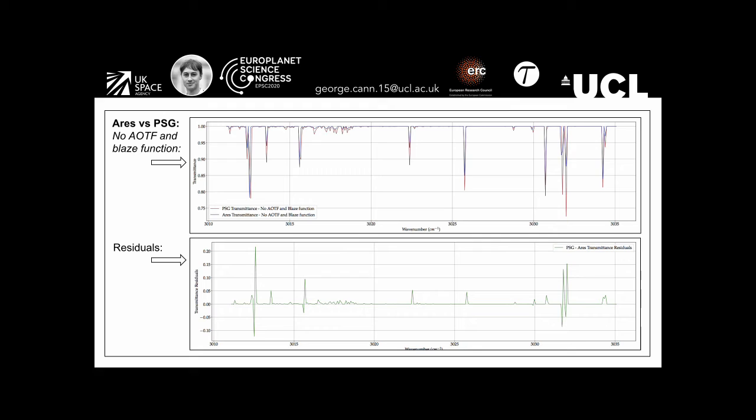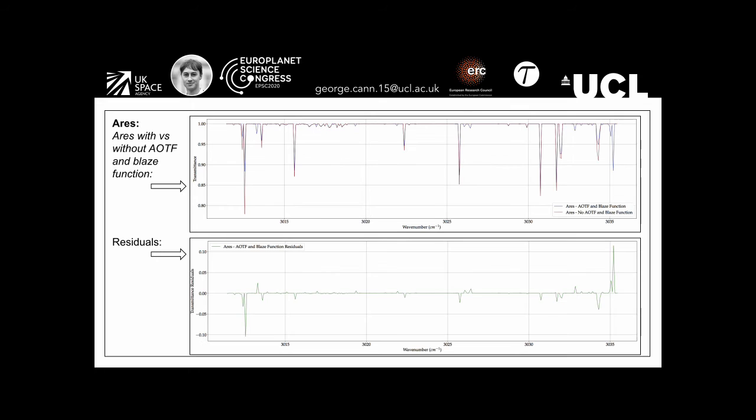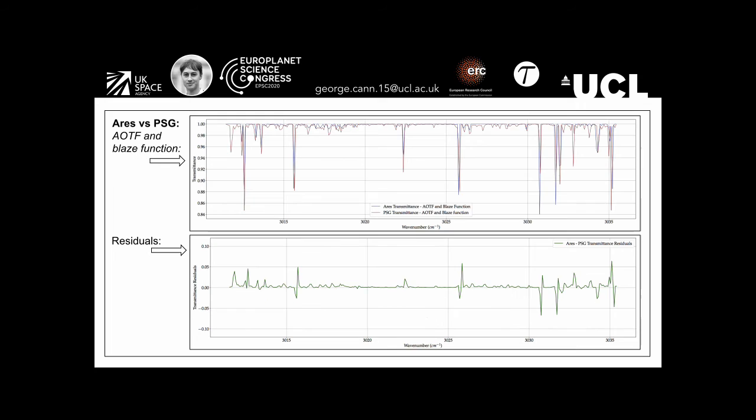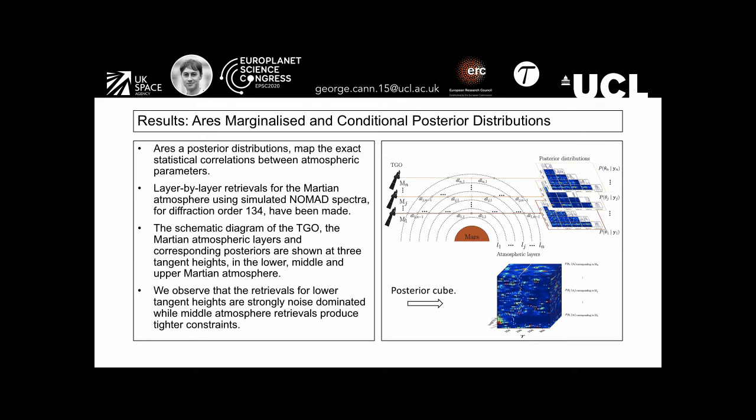The diagram here is the same as the one shown on the previous slide, zoomed in, whereby ARIES and the PSG are compared against one another with no AOTF and blaze function applied. The residuals are seen below. The next example shows only ARIES but with and without AOTF and blaze function applied. The final example shows ARIES versus the planetary spectrum generator with AOTF and blaze function applied in both cases. We find that the residuals are lowest when the AOTF and blaze function are both applied.